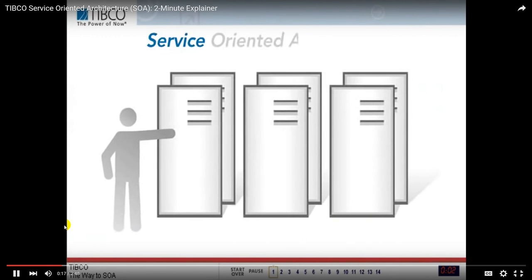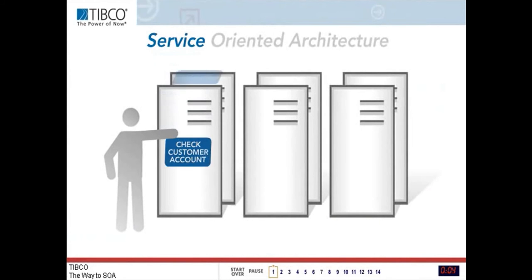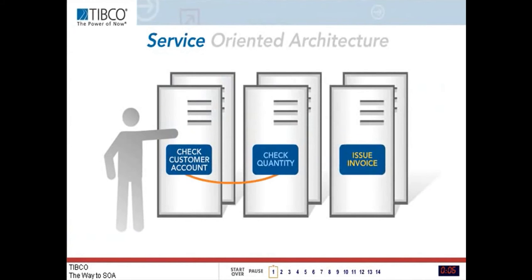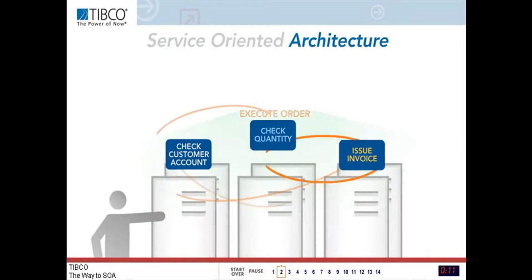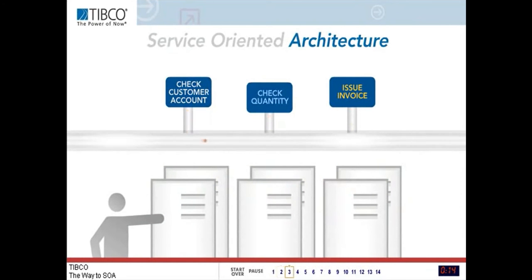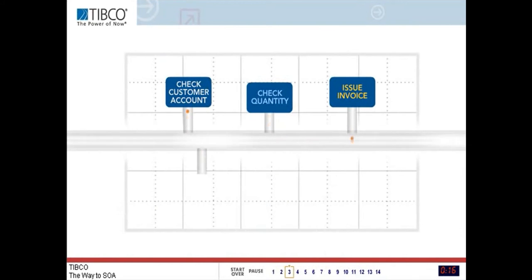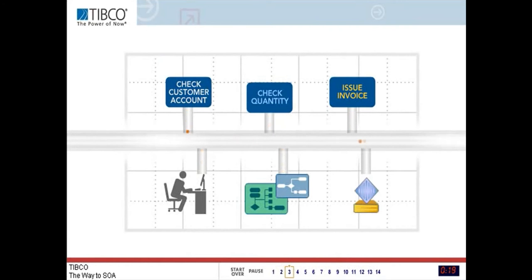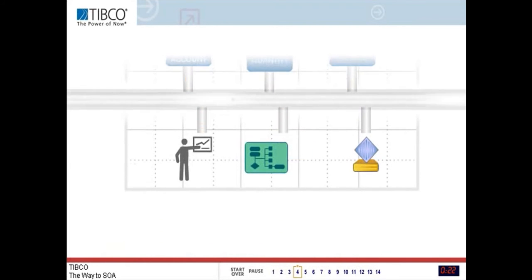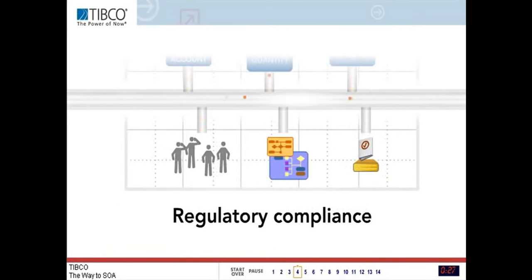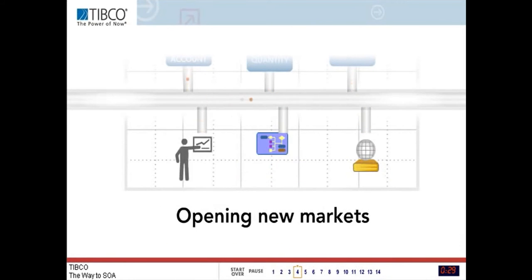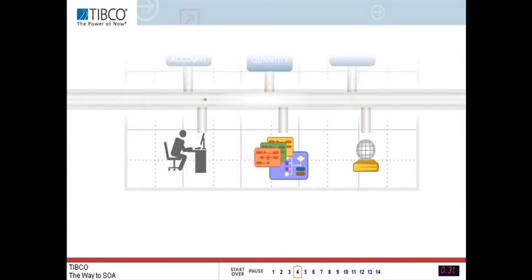Services in a Service Oriented Architecture are business functions that can be combined to form a complete business process. SOA frees these services from their legacy environment and makes them available for easy reuse by people, processes, and other applications. This reuse yields speed and adaptability — for faster execution of marketing campaigns, regulatory compliance, opening new markets, and improving business performance.